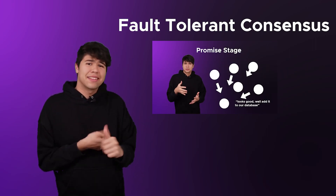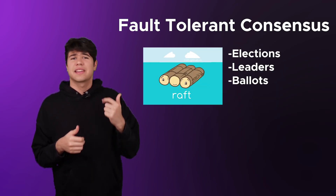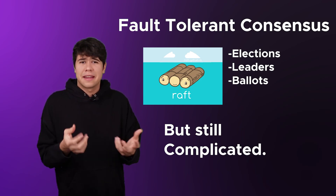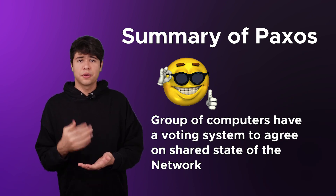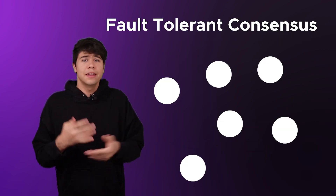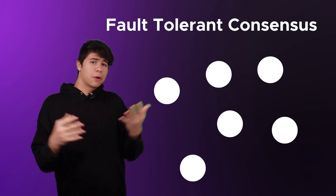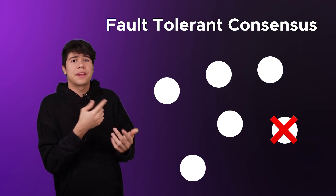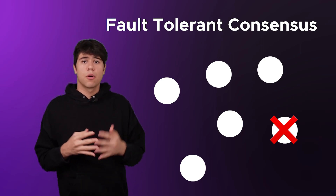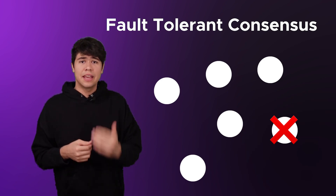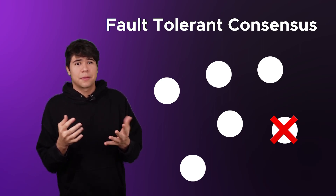There are ballots and it's complicated. That's why Raft introduced elections and leaders — overall it's very complex. The whole idea is that computers have a very complex voting system to agree on the shared state of the network. And if you look at the chart, you realize it is fault tolerant, meaning that since the network relies on each other, if one node goes down, the whole network can keep on continuing. It makes the system more reliable and resistant, even if one third of the nodes happen to be down. It's like a mini democracy, except for computers.